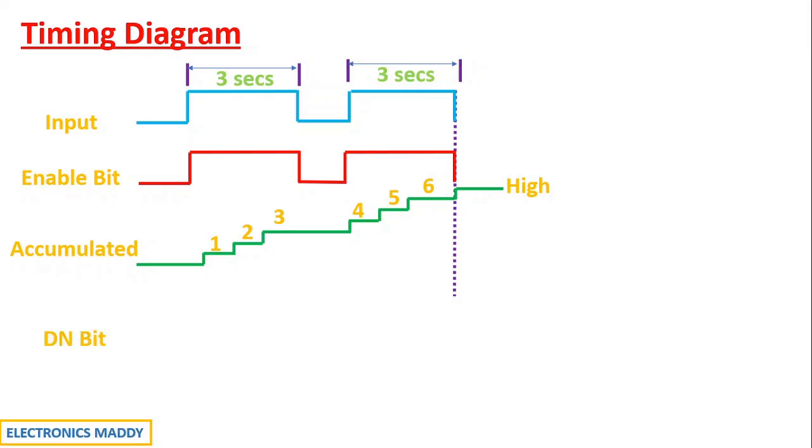How does the done bit vary then? Done bit will be low up to the point where the accumulated value is equal to the preset value. And once it is high, consequently it goes to high state. This was exactly what we saw in the cases. I hope this concept is clear. So the only difference with respect to retentive timer is that it continues to hold the accumulated value even if you turn it off and then turn it on. This is the working of retentive timer.